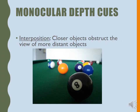Interposition is another one. An object that's closer is in front of, or in a position in front of, distant objects. Essentially, if something is blocking something else, with one eye you can tell that it's closer. I don't need two eyes to determine that there is a table slightly in front of the door. I just assume that the door must be further in the distance than the table I'm looking at.